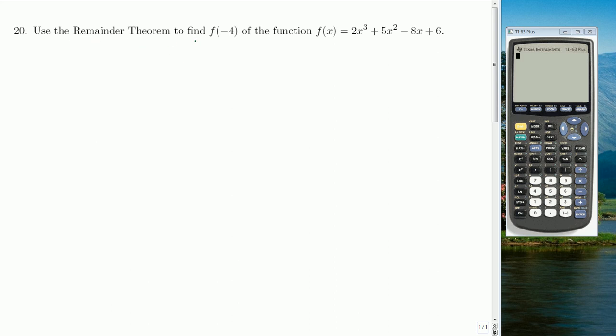Use the remainder theorem to find f at negative 4 of the function f(x) equals 2x cubed plus 5x squared minus 8x plus 6.